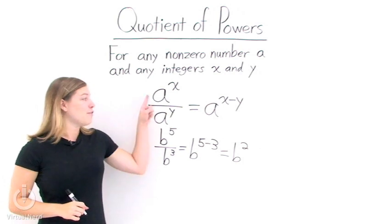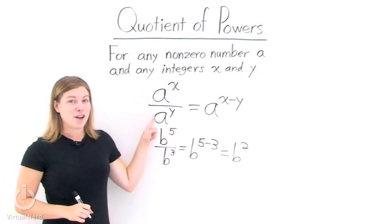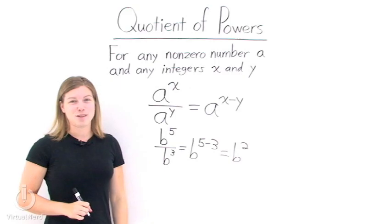So remember, if you're dividing two things with like bases, you can simplify it simply by subtracting the exponents.